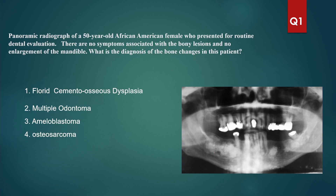As you can see, all the bony changes are very fuzzy and generalized. Usually odontomas would look very well defined. Ameloblastomas will be multilocular and cystic, and there will be enlargement of the mandible. There is no enlargement of the mandible noted in this patient and I don't see any cysts.